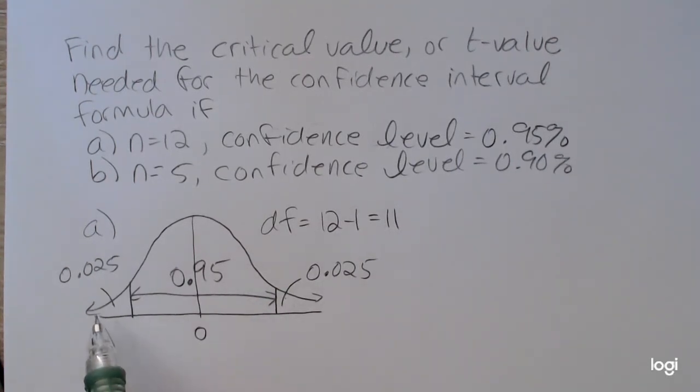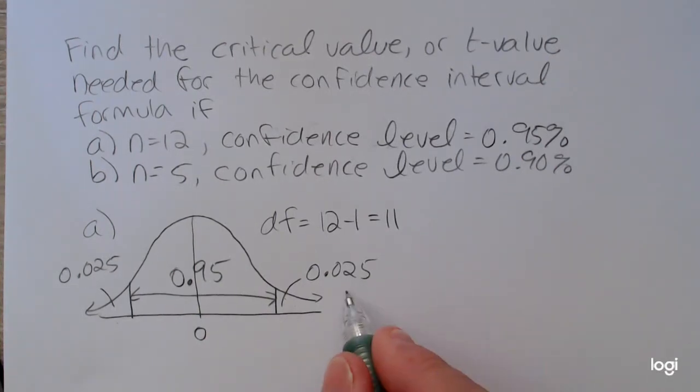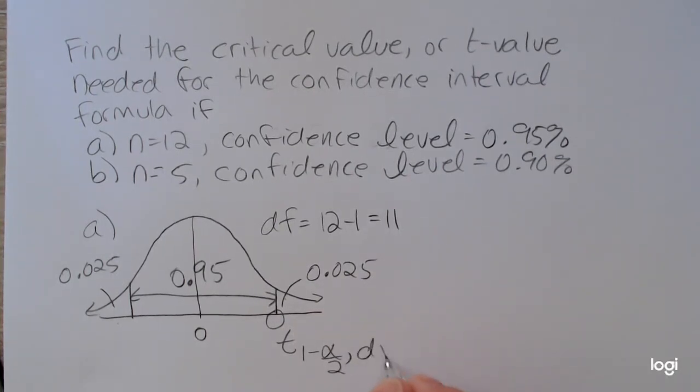So summing up all three of these values, you would get 1 or 100%. So if you're taking my class, the book uses this notation. So this value here, this critical value, is t sub 1 minus alpha over 2, comma, degrees of freedom.